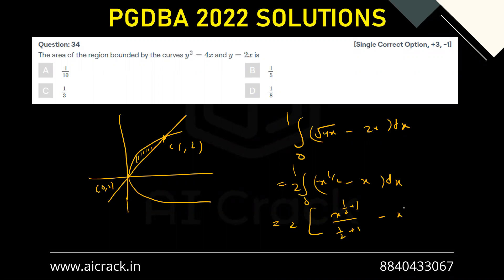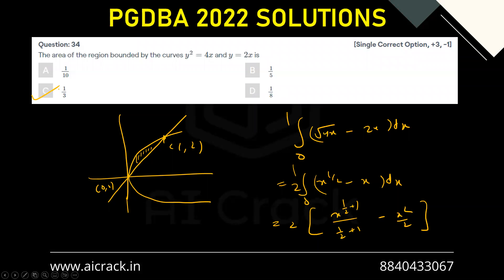This becomes 2 times [x^(1/2 + 1)/(1/2 + 1) minus x²/2], which becomes 2 times [2/3·x^(3/2) minus x²/2] with limits 0 to 1. So 2 times (2/3 minus 1/2), which gives 1/3 as the answer. So C is the correct answer.